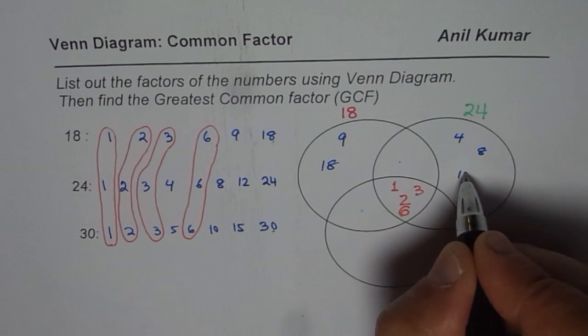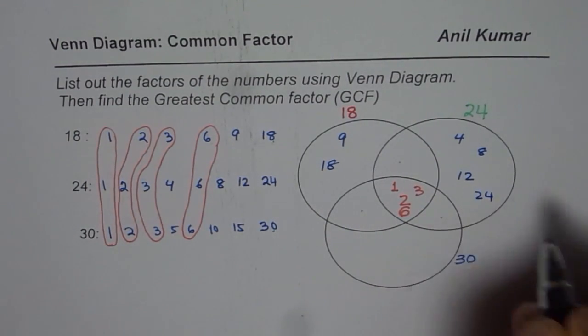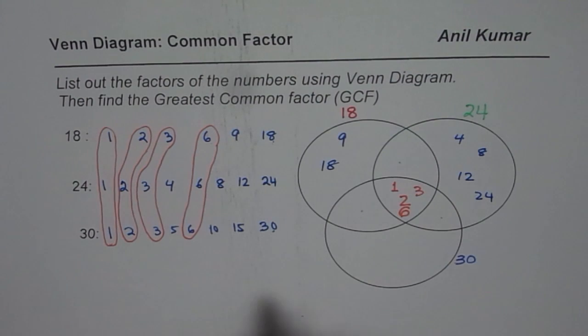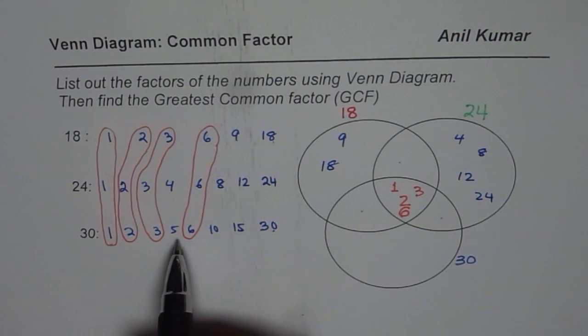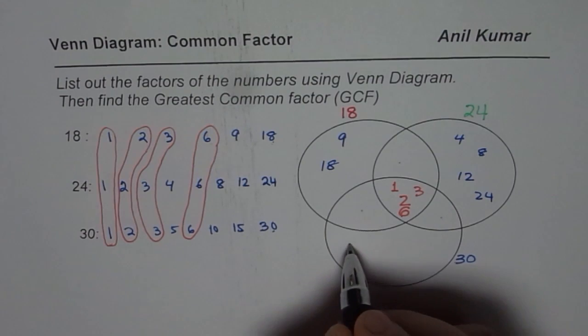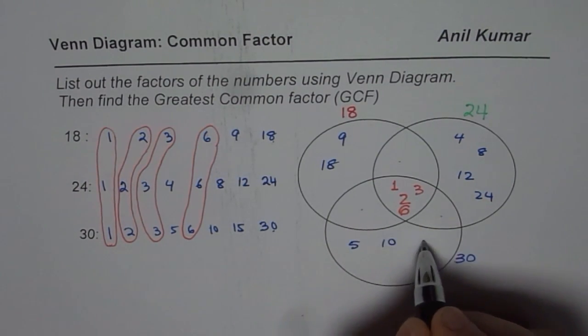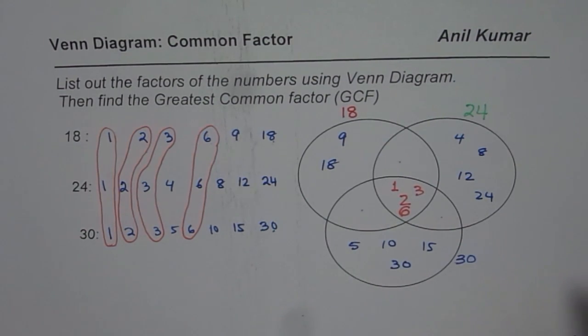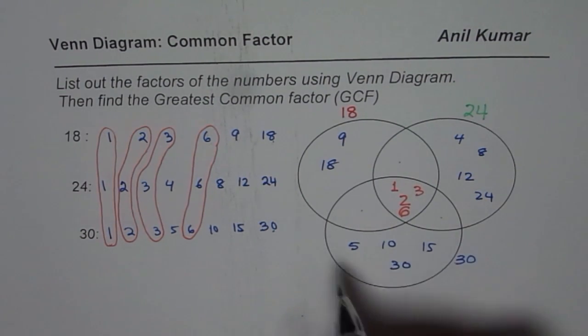4, 8, 12, 24. And for 30 we have 5, 10, 15, 30. 5, 10, 15, and 30. Do you see that? So that is how you get.